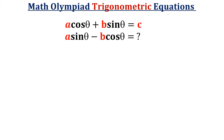Hello friends, today we are going to solve one past math Olympiad problem based on trigonometric equations. The given equation is a cosθ plus b sinθ is equal to c. We have to find the value of a sinθ minus b cosθ. So let's start this problem by considering the given equation.